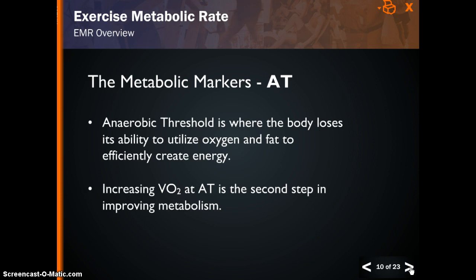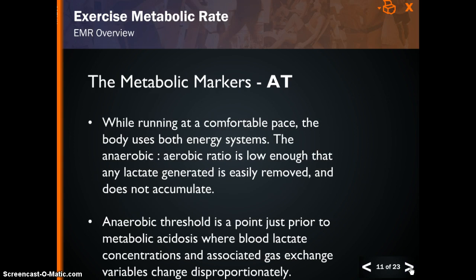Anaerobic threshold is the point at which the body loses ability to utilize oxygen and fat to efficiently create energy. Increasing the volume of oxygen consumed at your anaerobic threshold is the second step in improving metabolism. When running at a comfortable pace, the body uses both energy systems. The anaerobic to aerobic ratio is low enough that any lactate generated is easily removed and does not accumulate. Anaerobic threshold is the point just prior to metabolic acidosis, where lactic acid levels, concentrations, and associated gas exchange variables change disproportionately. This is also the point at which you will start to hyperventilate. The body buffers lactic acid by releasing bicarbonate, HCO3, from your liver. Lactic acid plus bicarbonate yields carbon dioxide, which is delivered back to the lungs where it is exhaled. When you start breathing hard during a very intense workout, your body is attempting to buffer excess lactic acid and is throwing off higher levels of carbon dioxide. This occurs because at high exercise intensity, your body couldn't manage the load aerobically and consequently produces an excess of lactic acid.